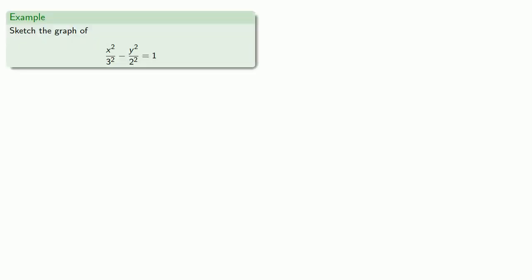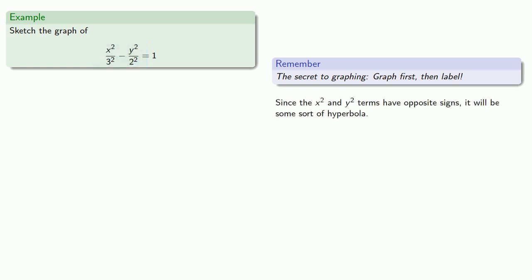So let's sketch the graph of this conic section. And remember the secret to graphing is, graph first, then label. The first thing we might notice here is the x squared and y squared terms have opposite signs and so this will be some sort of hyperbola.